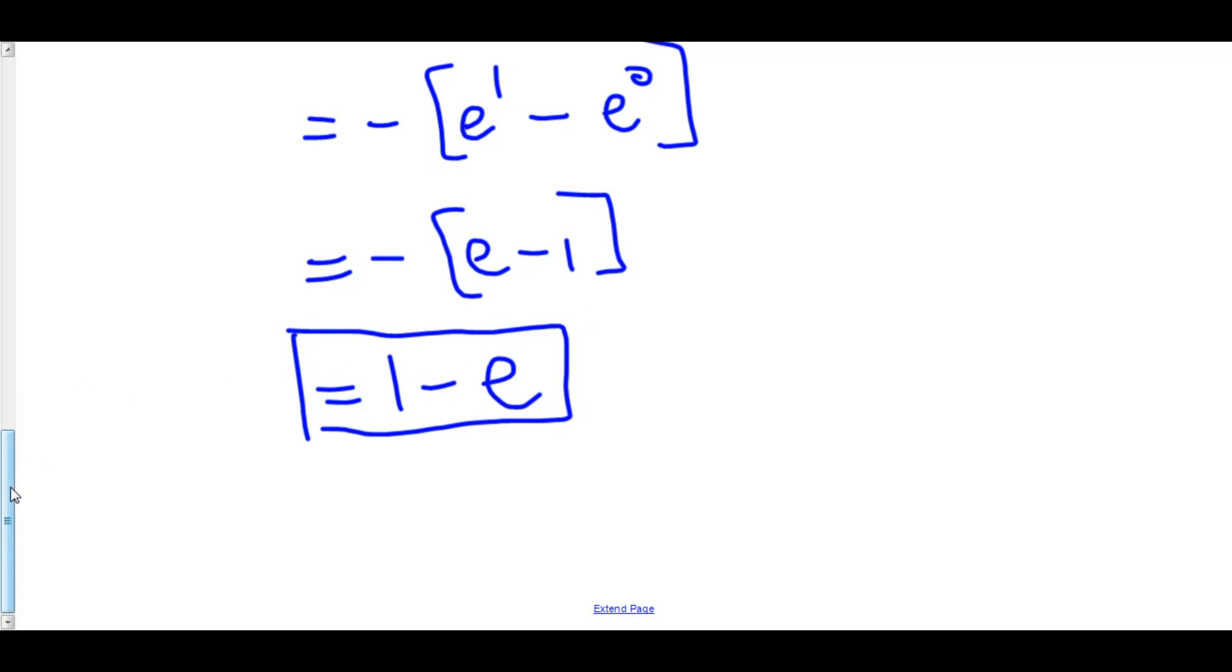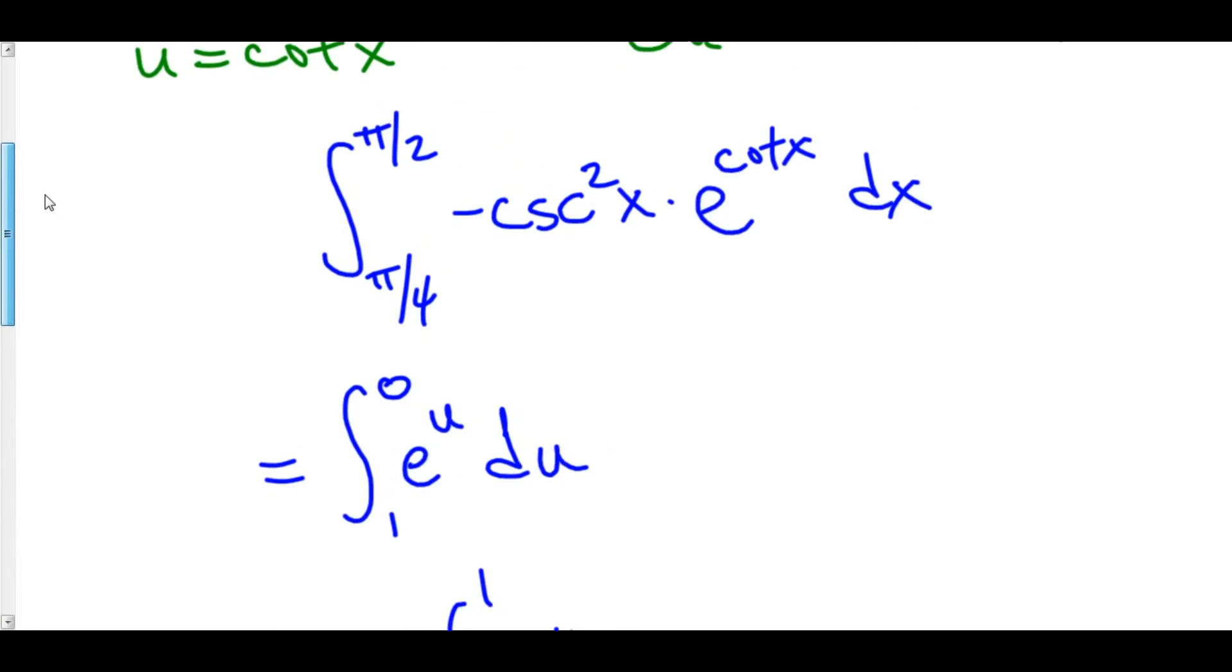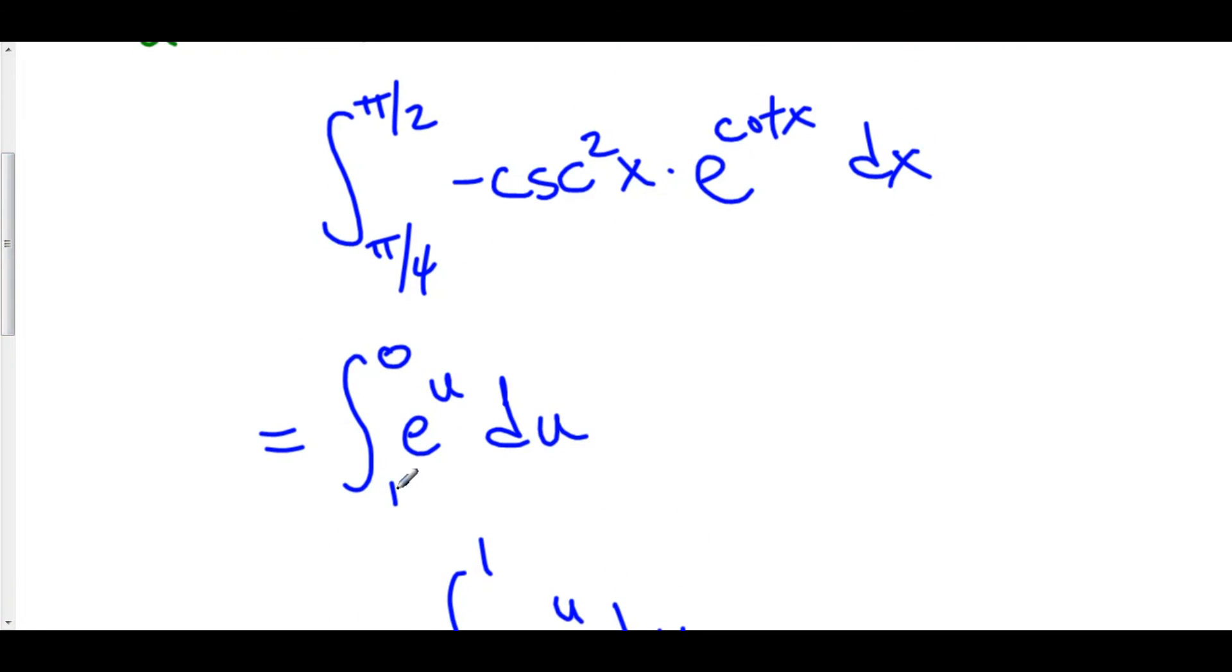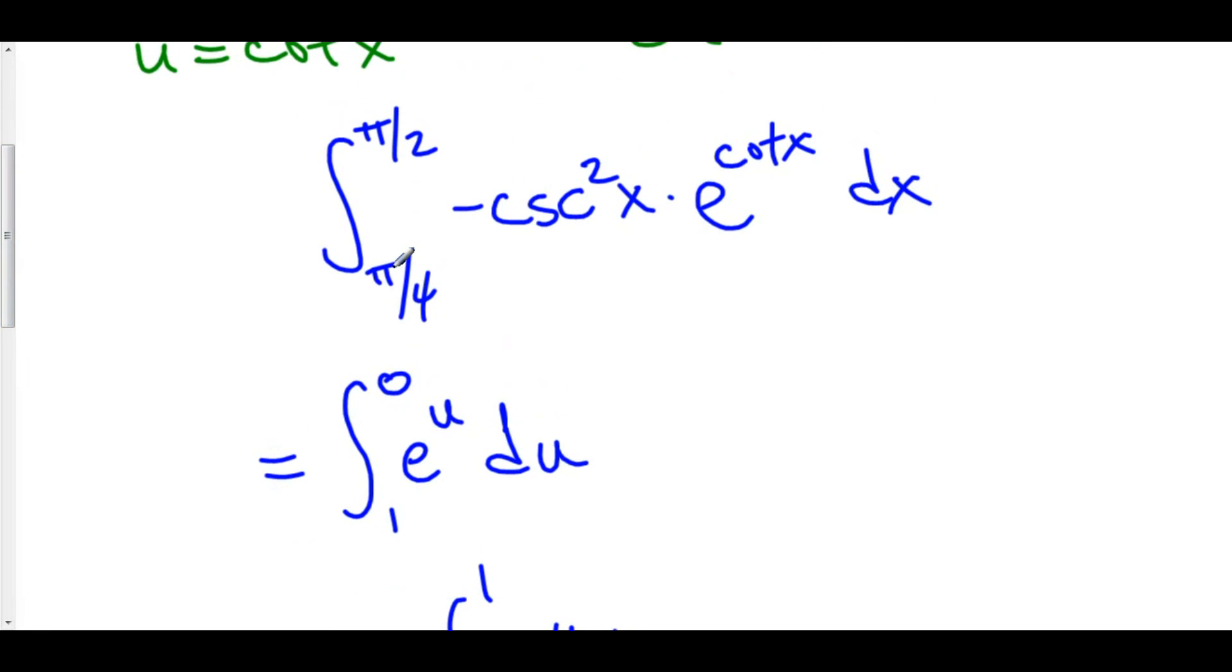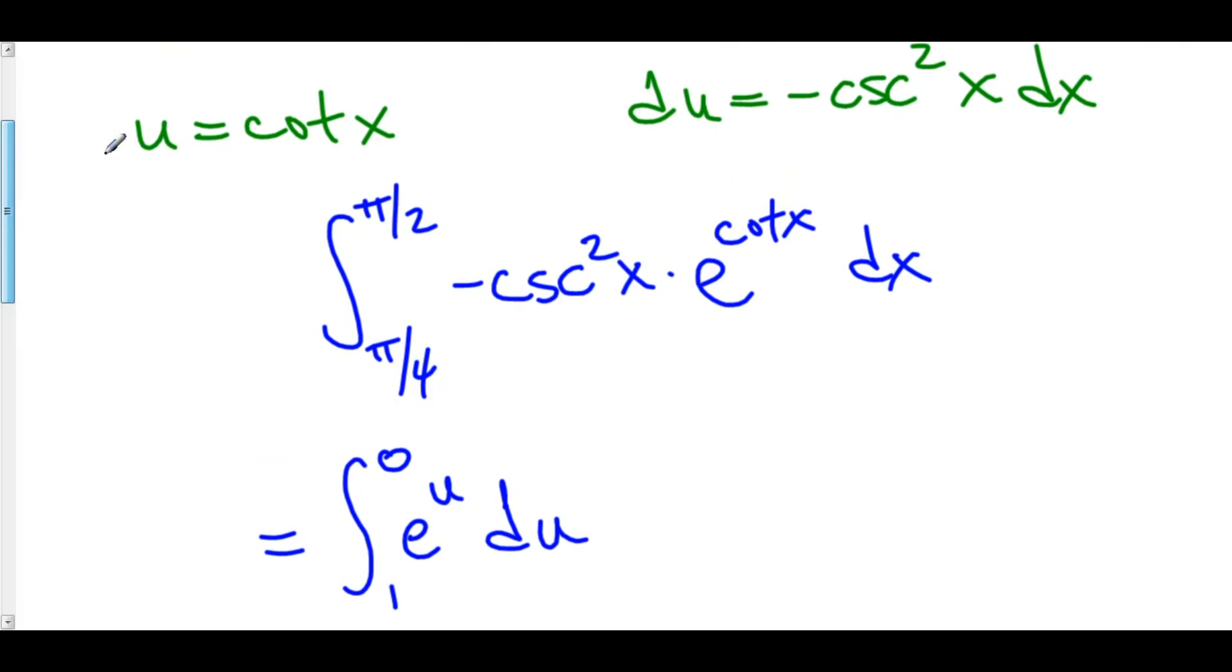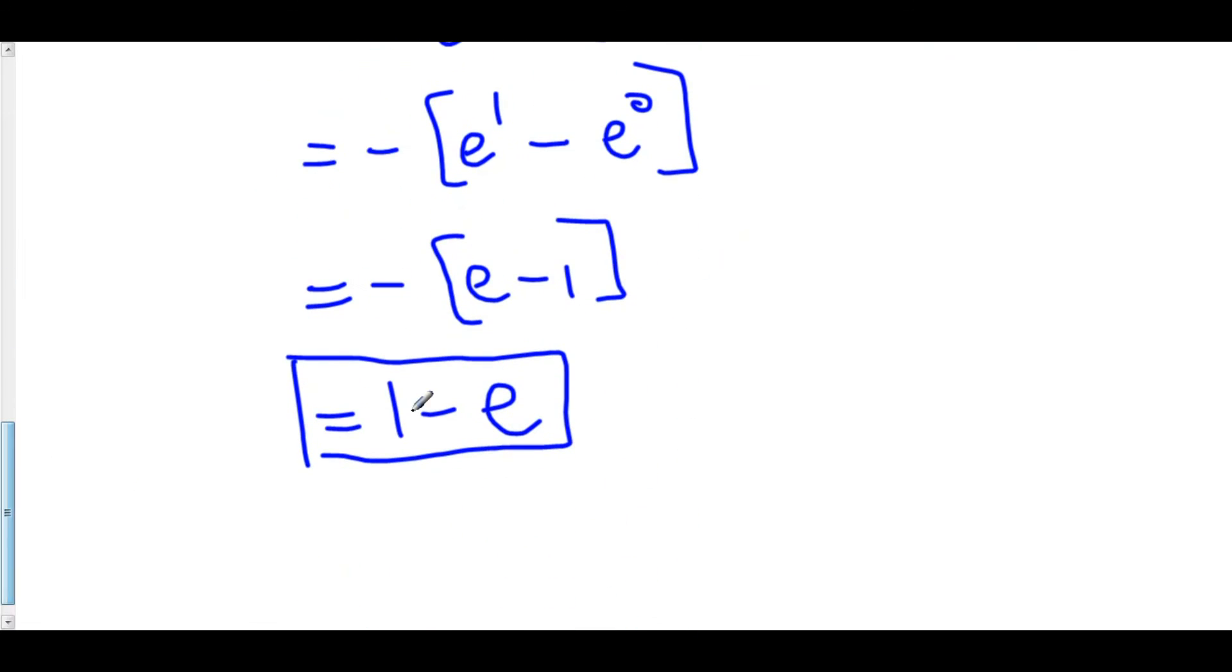Changing your limits of integration to u is so much easier than having to plug x back into u and then use your original limits of integration. So, whenever you can, whenever you have limits, just change them to u using your relation from u to x. It makes the entire problem that much simpler.